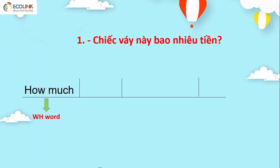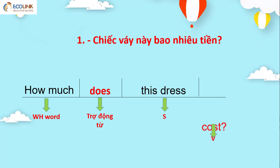Vậy ta có: How much does this dress cost? Chúng ta thấy rằng chủ ngữ 'this dress' là số ít, vậy ta dùng trợ động từ 'does'. How much does this dress cost?